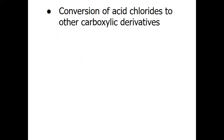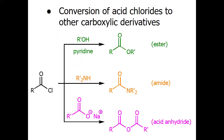We know the conversion of acid chloride to other carboxylic acid derivatives. Here are some examples: acid chloride when treated with alcohol in pyridine may yield an ester, because the reactive carbonyl compound can easily provide a less reactive derivative. Similarly, this reactive acyl fluoride when reacting with an amine may give the amide functionality, and when reacting with the sodium salt of carboxylic acid may produce or synthesize the acid anhydride.